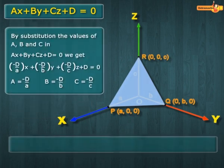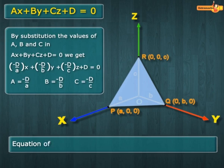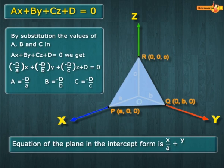Substituting these values in the equation of the plane and simplifying, we get X over A plus Y over B plus Z over C equals 1, which is the required equation of the plane in the intercept form.